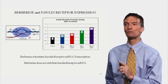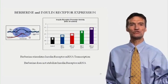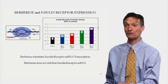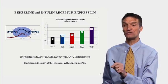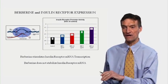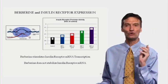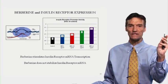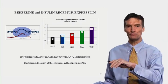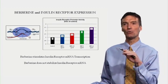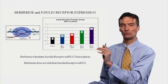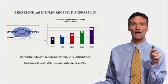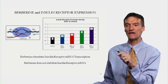Looking at insulin receptor promoter activity: are we going to transcribe more messenger RNA for the insulin receptor? This rises if you incubate cells with berberine in a dose-dependent fashion. Berberine stimulates insulin receptor messenger RNA transcription — it doesn't stabilize the mRNA as it does with the LDL receptor; here it directly increases transcription. In our prior section we showed berberine blocks transcription of PCSK9 and stabilizes the LDL receptor mRNA. Here, berberine increases transcription of the insulin receptor — it sits on the promoter site, causing our body to make more mRNA, which is translated into more insulin receptors on the cell membrane, giving greater insulin sensitivity.